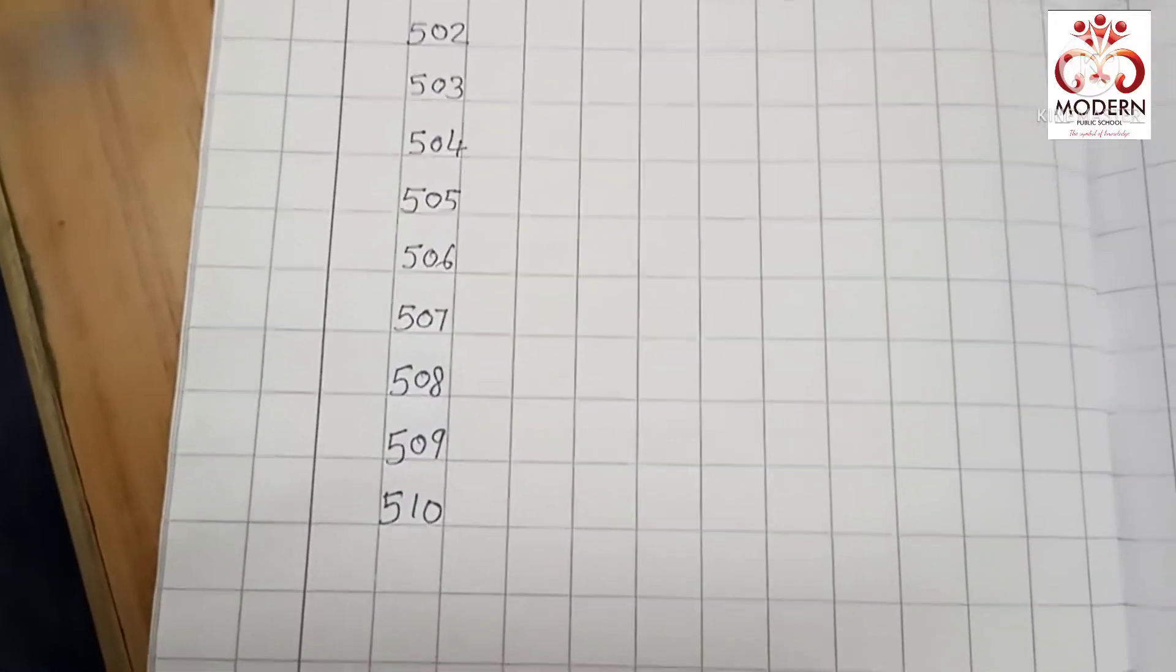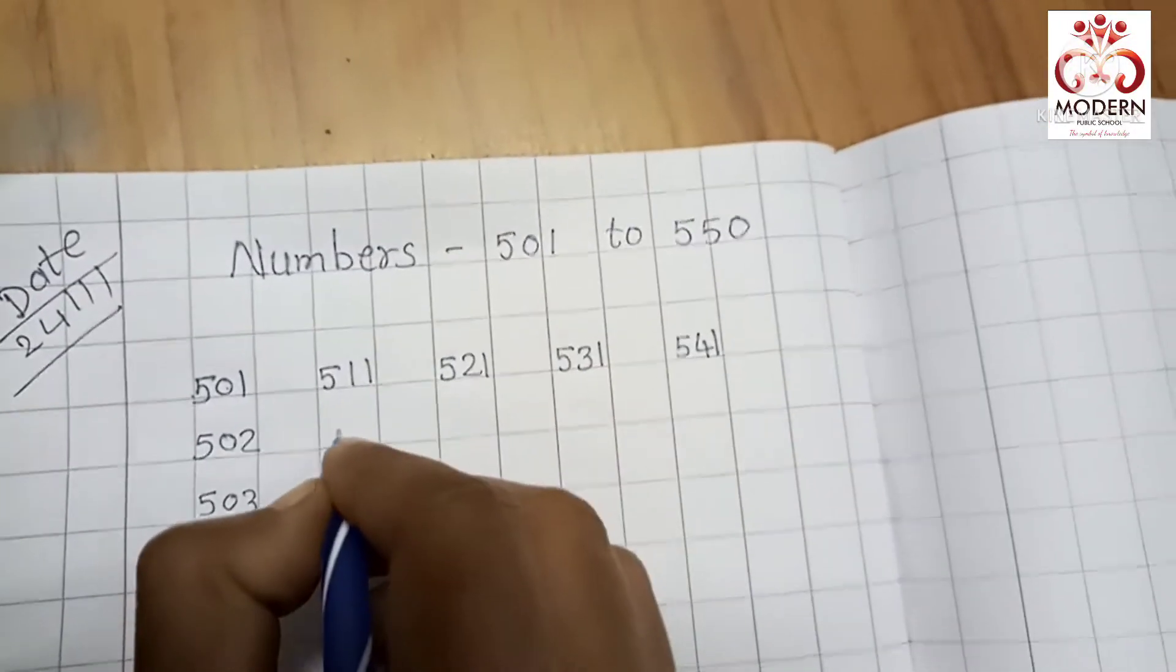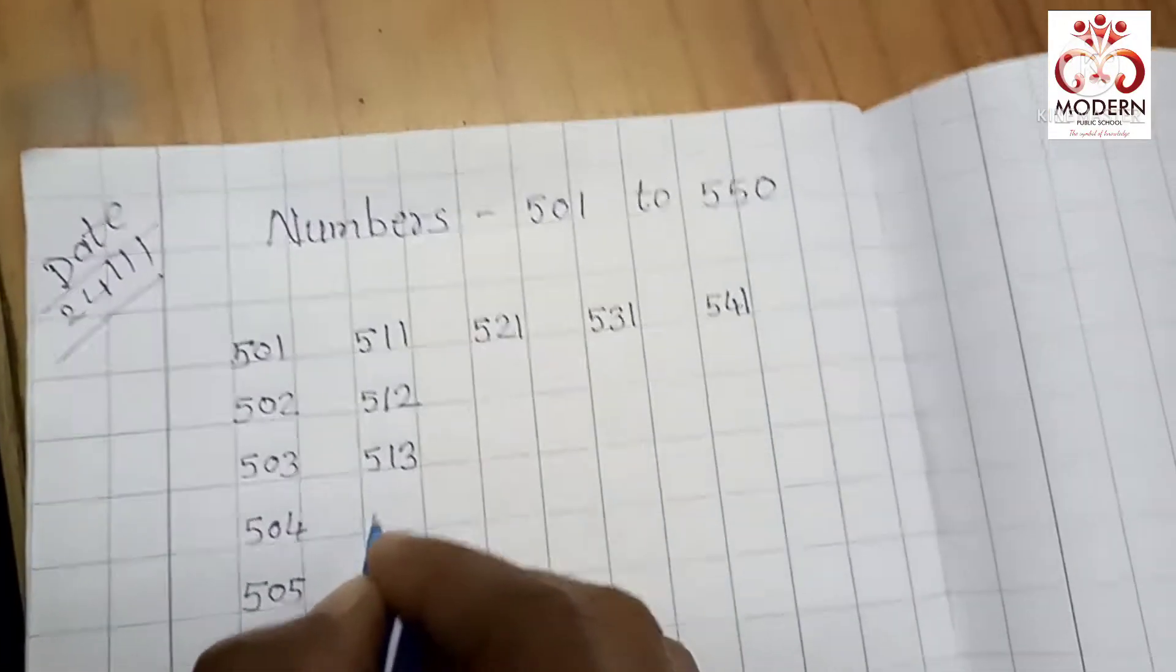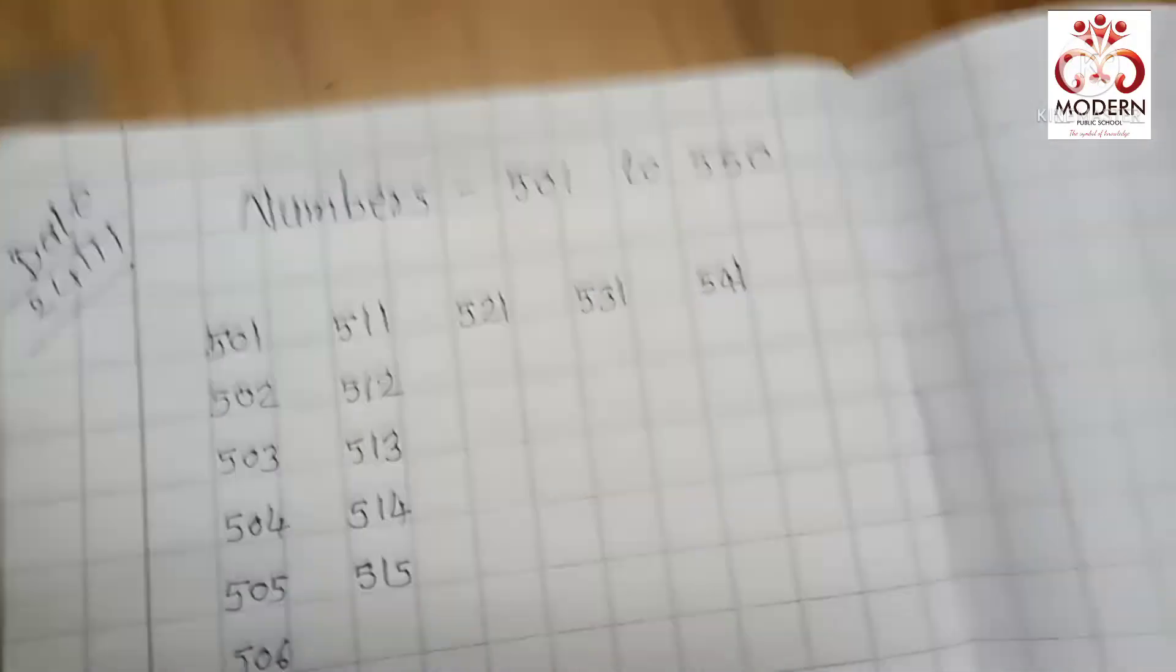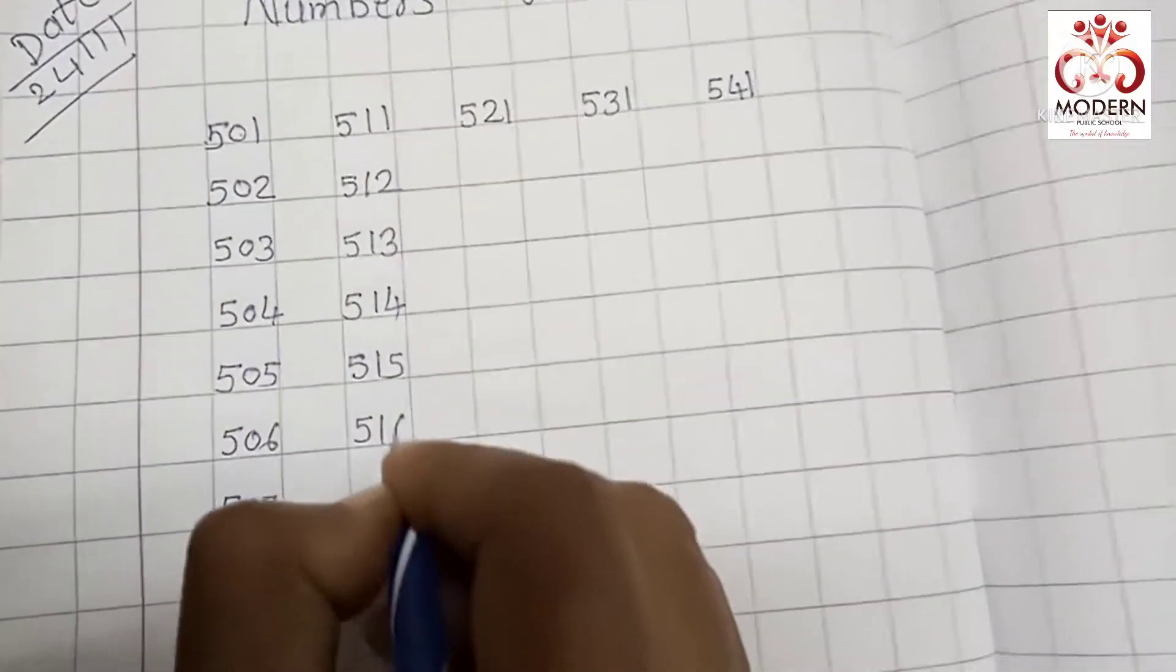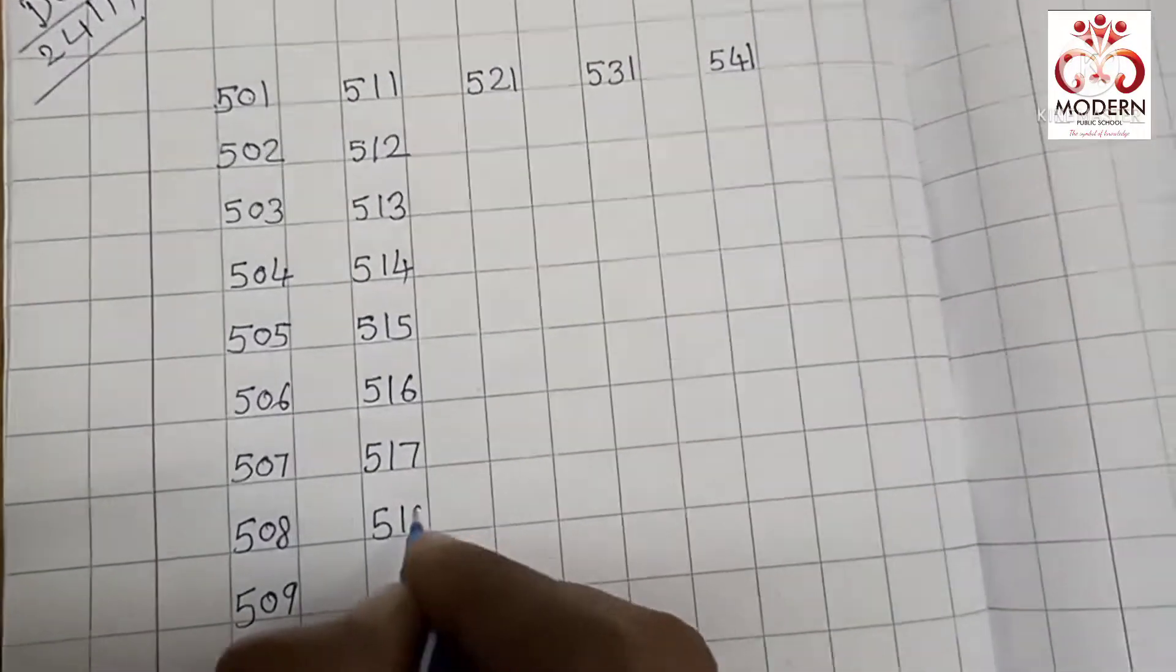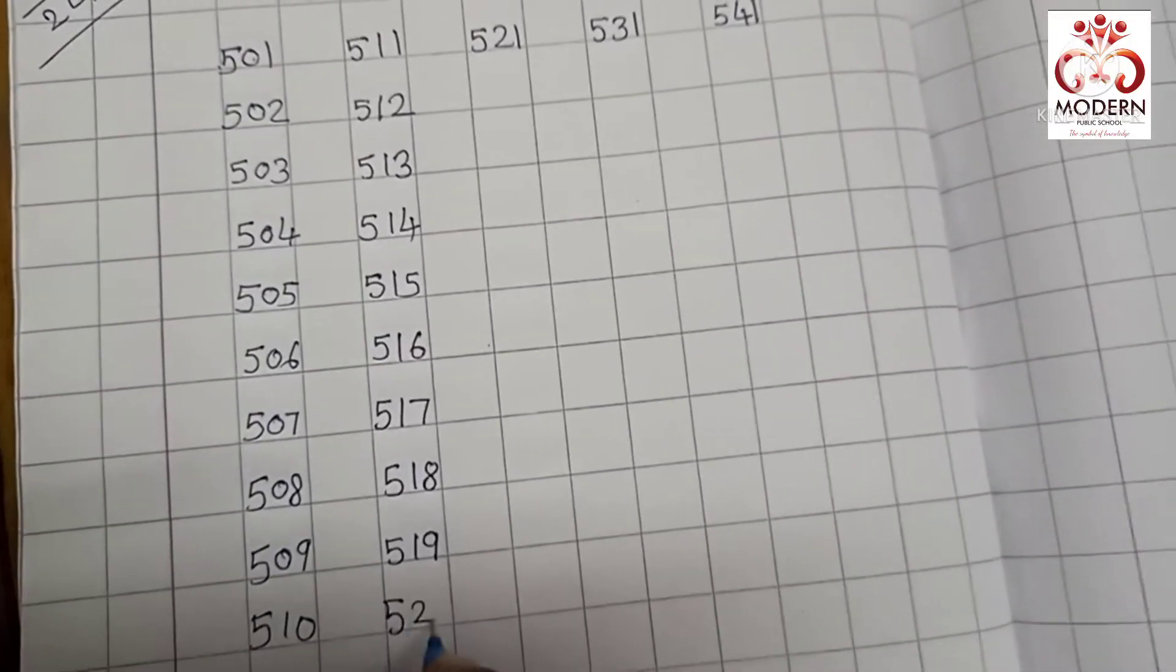Is it so easy? Yes. So let's start next row. 511, 512, 513, 514, 515, 516, 517, 518, 519, 520.